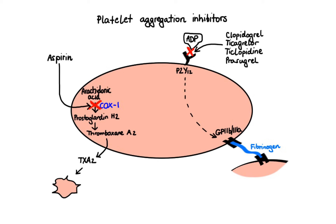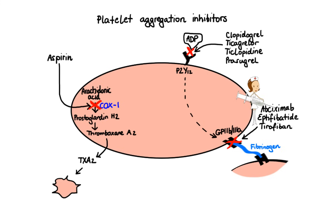Next we have glycoprotein 2b3a receptor blockers, namely abciximab, eptifibatide, and tirofiban. These agents inhibit platelet aggregation by binding to the glycoprotein 2b3a receptors on platelets, thus preventing fibrinogen from binding to platelets and making them unable to cross-link. Unlike the other drugs discussed so far, glycoprotein 2b3a inhibitors are administered only intravenously.